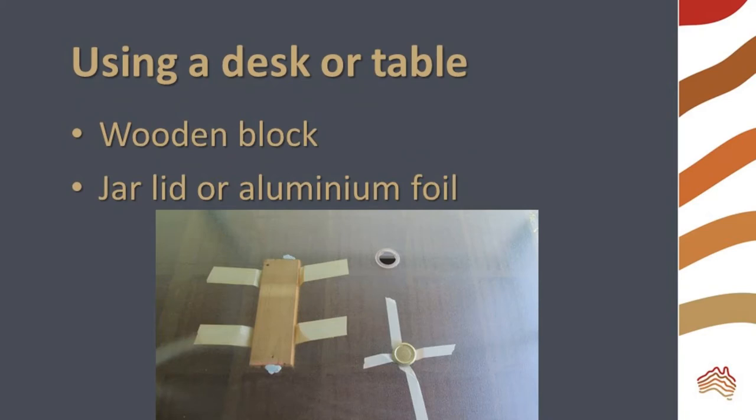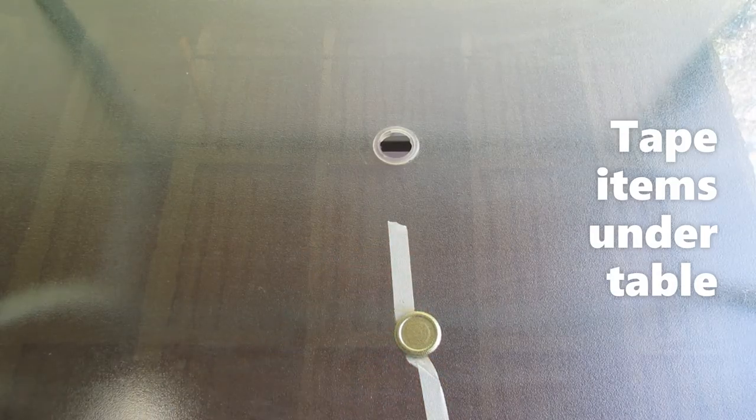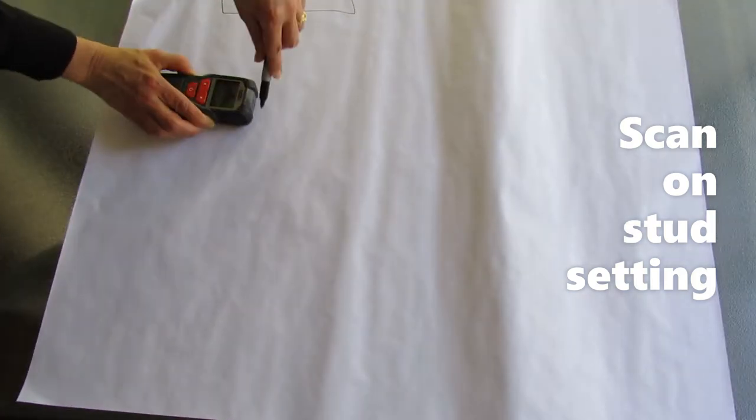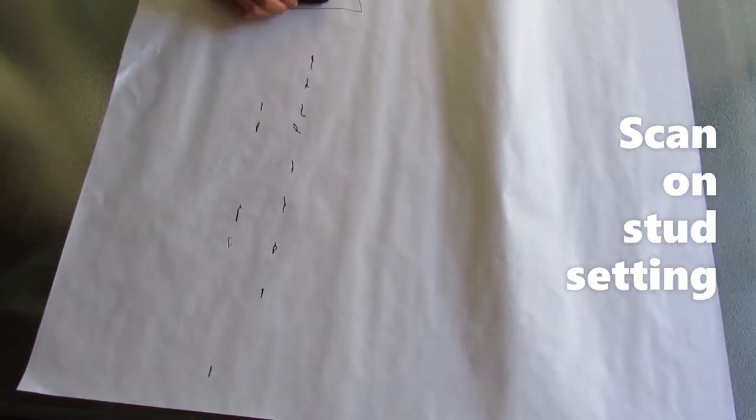If you don't have an exploration box, you can use a desk or table with a block of wood and a jar lid or piece of alfoil taped underneath. First tape your item under the table, cover with a large sheet of paper, and scan as with the box, using both the stud and metal settings on the stud finder.